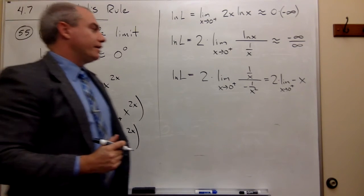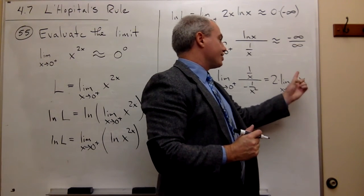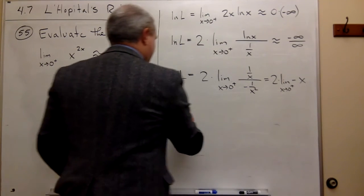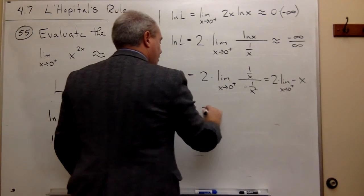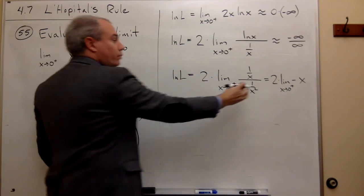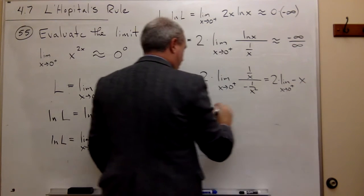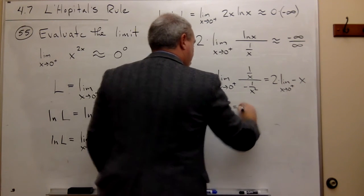Now clearly, if I plug in 0 at this point, I just get 0. So what I get is that ln of L is equal to 2 times 0, which is 0.